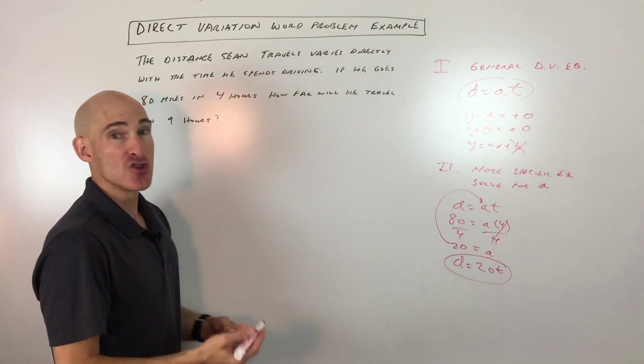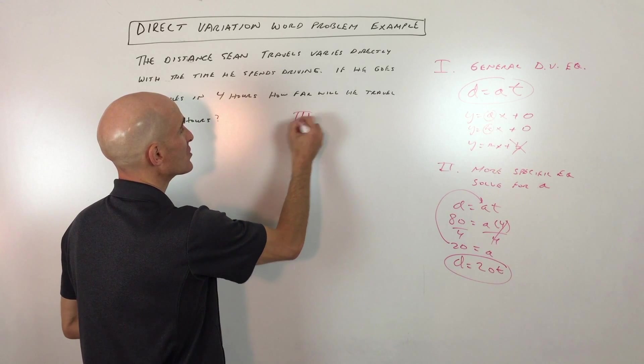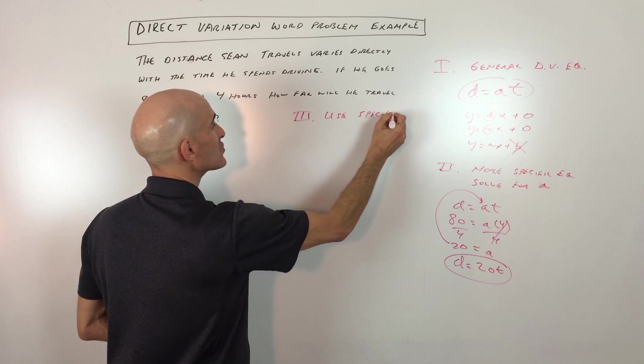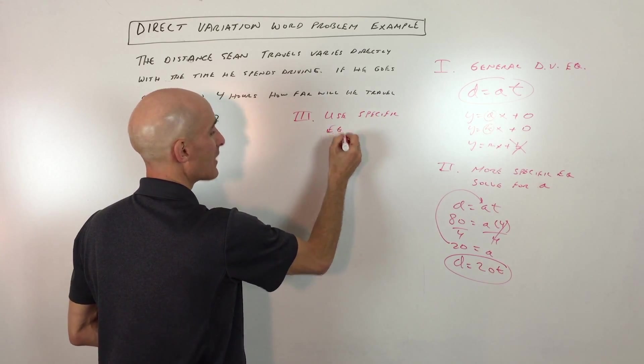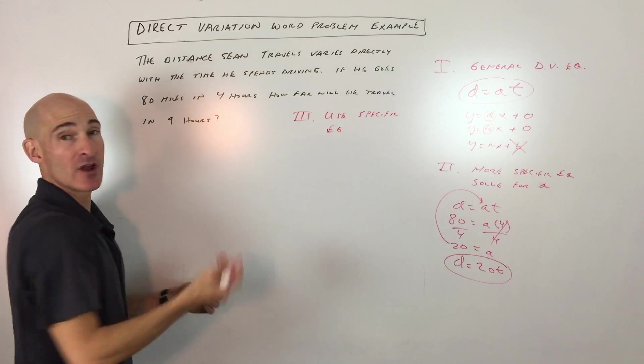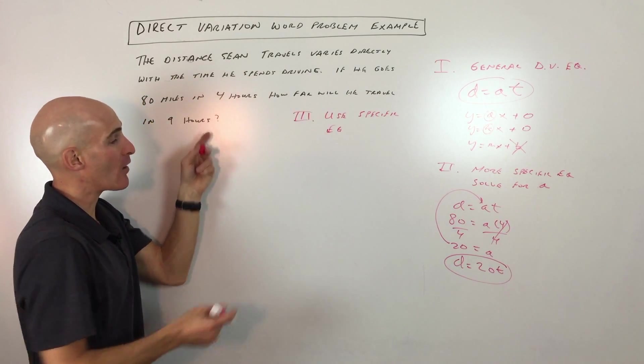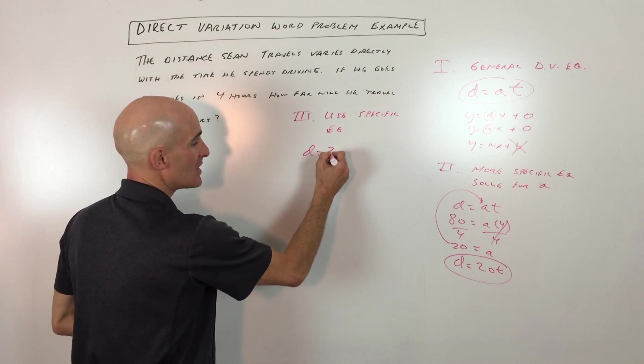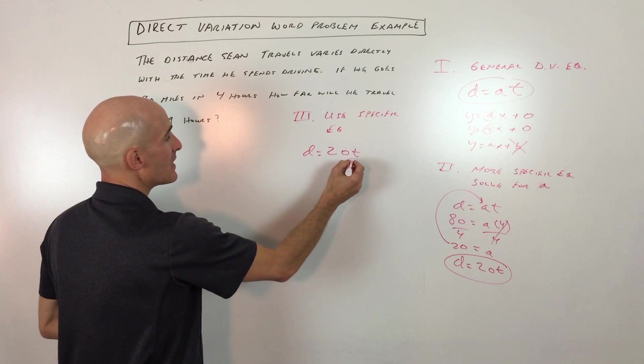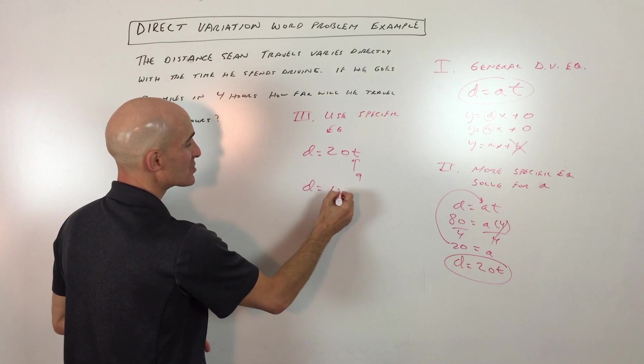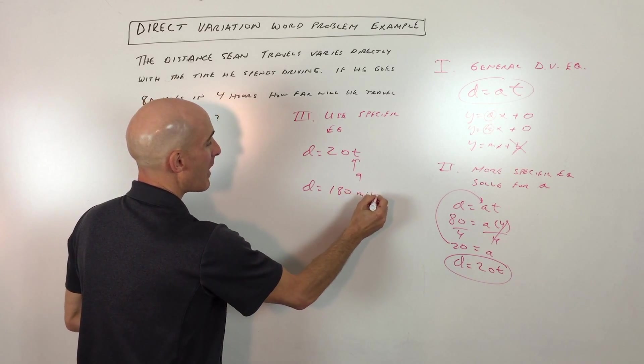Step number three: use the specific equation that you solved for the a value to solve another problem. The last problem here says how far will he travel in nine hours. We've got our equation d equals 20t. How far will he travel in nine hours? You're going to put nine in place of t. So that's going to be 20 times nine, which is 180 miles.